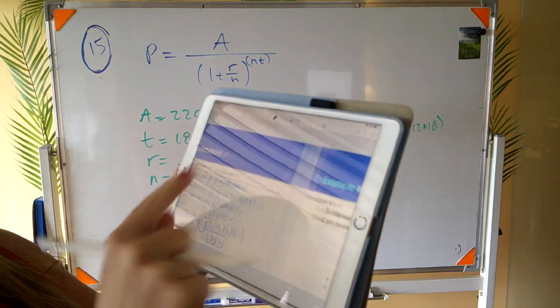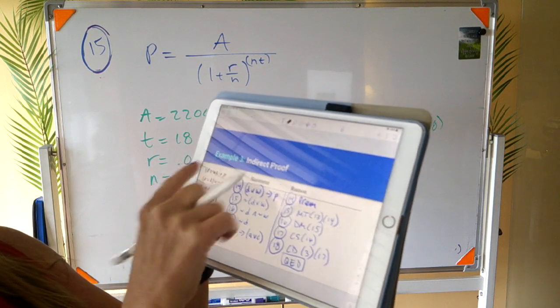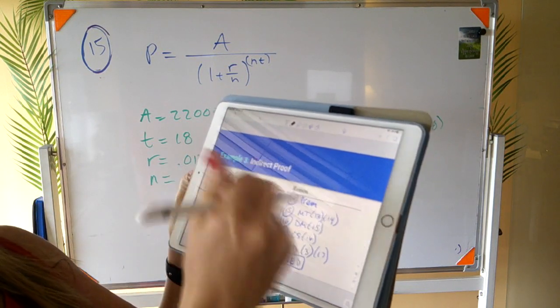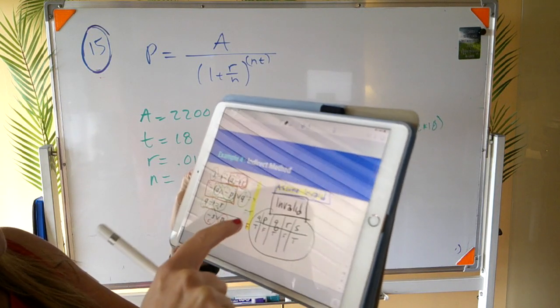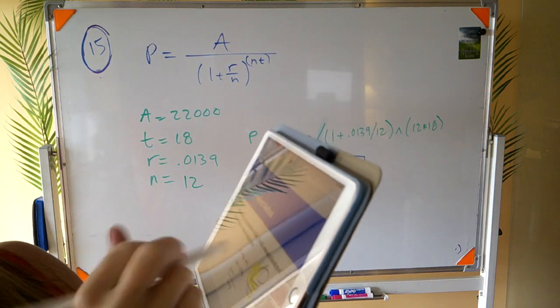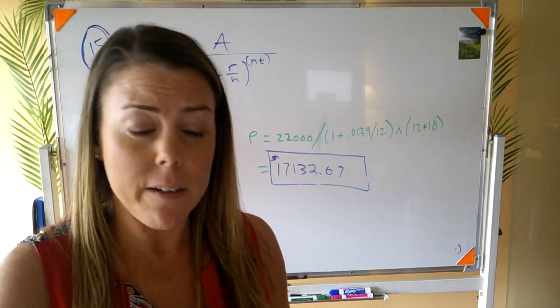I think you get the idea. You create the background part and then anything that's my handwriting I've annotated. Okay so then the question becomes well how do I record myself.